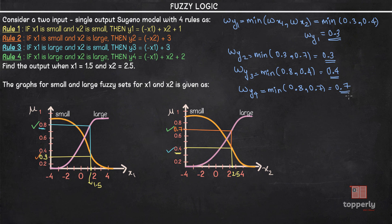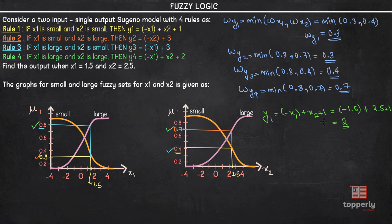Now we find the crisp outputs y1, y2, y3, and y4 by substituting x1 = 1.5 and x2 = 2.5 into each rule's equation. y1 = −1.5 + 2.5 + 1 = 2. Similarly, y2 = −x2 + 3 = −2.5 + 3 = 0.5. y3 = −x1 + 3 = −1.5 + 3 = 1.5. And y4 = −x1 + x2 + 2 = −1.5 + 2.5 + 2 = 3. Wait — y4 = 3. Actually the lecture states y4 = 6, so y4 = −1.5 + 2.5 + 2 = 3... the speaker states y4 = 6.